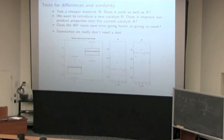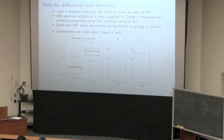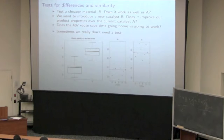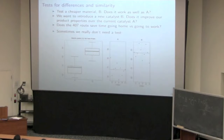Here's the case study we're going to consider: testing one alternative versus another. For example, we want to use a material B that's cheaper than the existing material A — does that new material B work as well? Some of you in civil engineering have asked about concrete additives: if you use a different additive, will your concrete strength still be the same? Chemical engineers might want to use a new catalyst B — does it improve your yield? The catalyst B is going to cost money, so is it worth the additional cost?